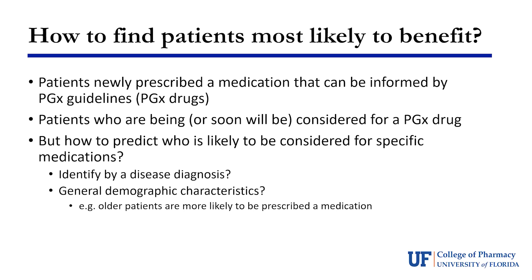The challenge is predicting who is likely to be considered for a specific medication. We could do it by disease diagnosis — patients diagnosed with a certain disease are likely to be prescribed a given drug class, so we could test them at diagnosis. However, sometimes the interval between diagnosis and prescription is basically the same visit, so we couldn't get results back in time. We could also look at general demographic characteristics, such as older patients being more likely to be prescribed medications in general, and whether that similarly applies to PGx drugs.